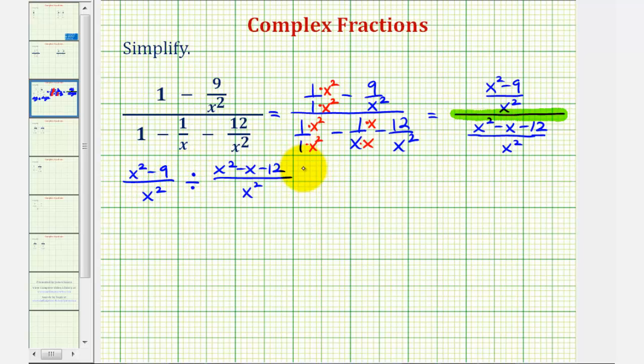So now, we'll write this as a multiplication problem. First fraction stays the same. Then, instead of dividing by the second fraction, we're going to multiply by the reciprocal, which would be x squared over the quantity x squared minus x minus twelve.